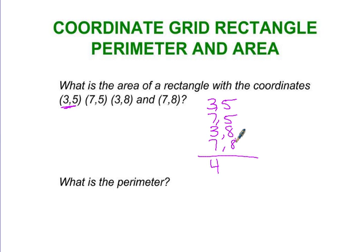5 and 8, the other side of the rectangle, 8's the bigger number, take away 5, is 3. So this is a 4 by 3 rectangle.